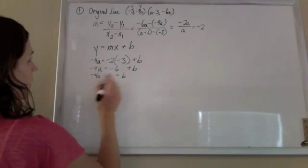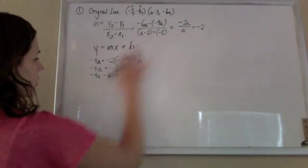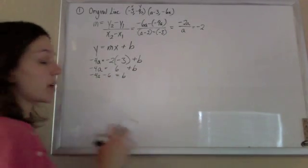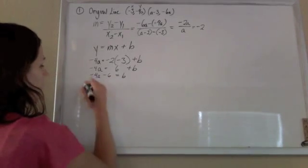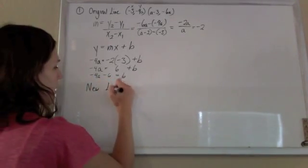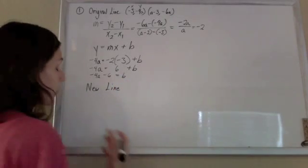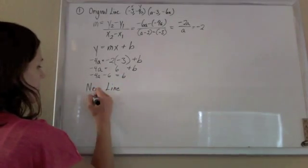So we have our slope as negative 2, and our y-intercept as negative 4a minus 6 for our original line. And now for this new line that they want the equation of. Every time you write an equation of a line, you need a slope.